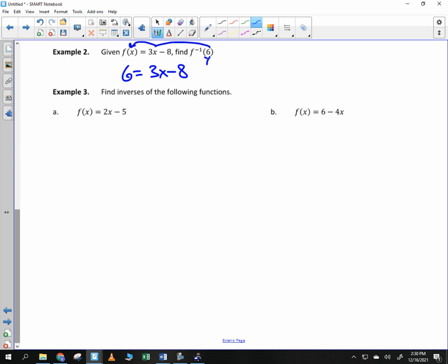So instead of going in for x, it goes in for the function value. Could we then find x? Yeah, we're going to add eight. We get 14 = 3x. We divide by three and we get 14/3 = x.